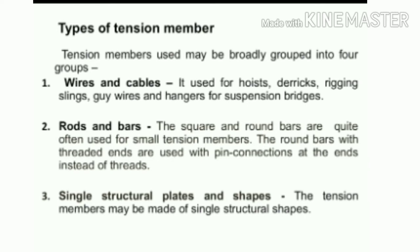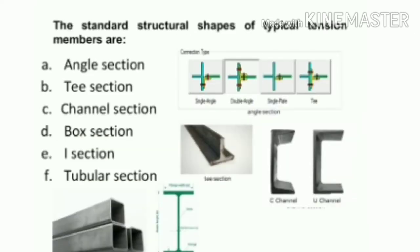The third type is single structural shapes, also called angle sections and T-sections, which are used as tension members. Angle sections are considerably more rigid than wire ropes, rods, and bars. When the length of the tension member is too long, single angle sections also become flexible. Standard structural shapes for typical tension members include angle sections, T-sections, channel sections, box sections, I-sections, and tubular sections. Angle sections may be single angle, double angle, or single plate; channel sections may be C-channel, U-channel; and box sections may be rectangular or square.